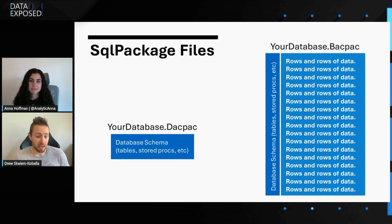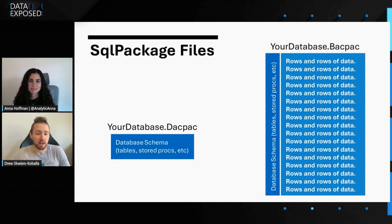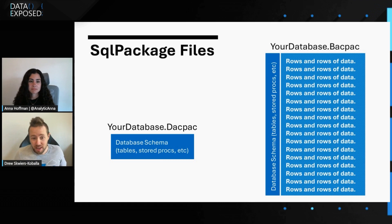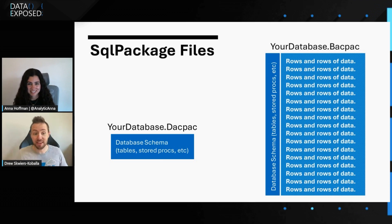However, it's generally pretty small — a couple of megabytes, maybe up to a gig for a really large database with thousands of tables. But when you get into the portability options with a BACPAC, not only do you have your database schema, but now you have all of your data. And you might have an idea of how large your database is — maybe it's 50 gigs, hundreds of gigs, terabytes of data. Now that copy of your database could be very large.